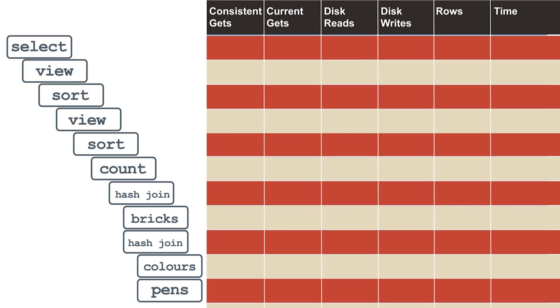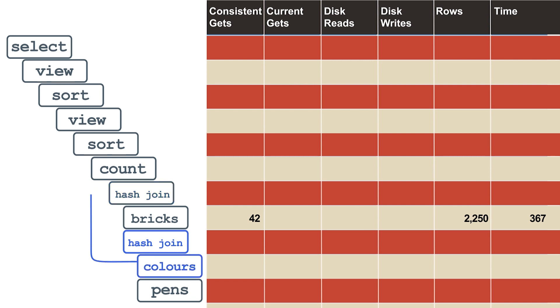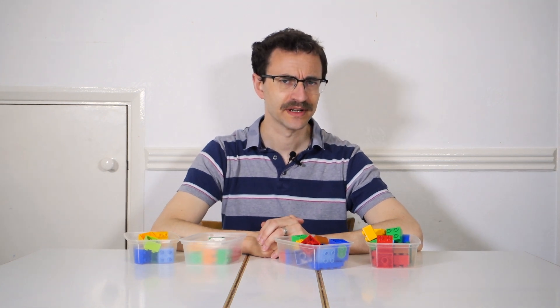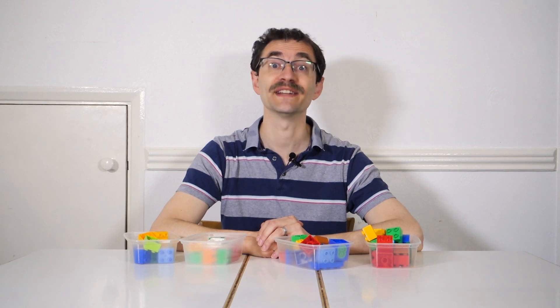Going down the plan to the first leaf, we can see this query first reads all the rows in the bricks table — this uses 42 gets and took 367 microseconds. These rows then flow up to the hash join, which triggers the second join, reading all rows from colors in three gets, then fetching all the data from the pens table in another 42 gets. The gets, disk, and timing figures are all cumulative, so to see the values for a particular step, you need to subtract off the corresponding values for its direct children.